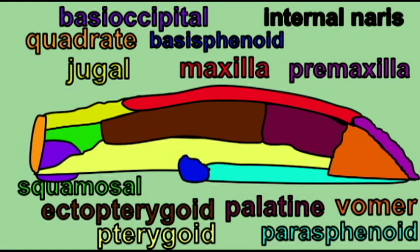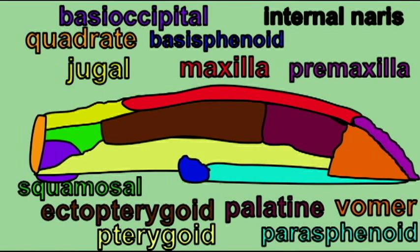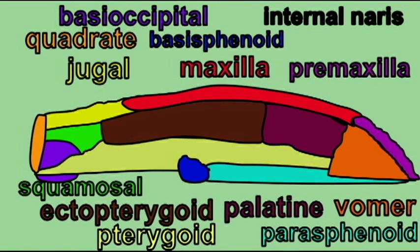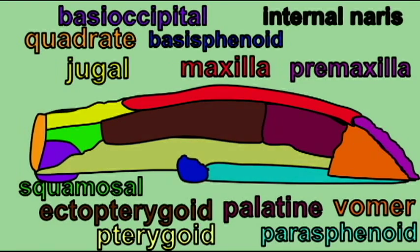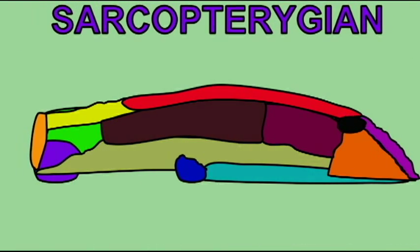The sarcopterygian fish moved the posterior nostril from their snout to the roof of their mouth so that it became an internal nostril and they could then breathe through their noses.